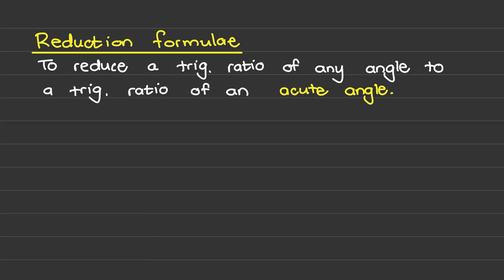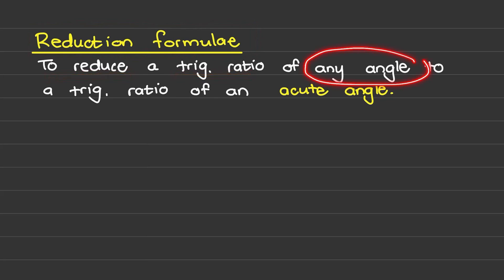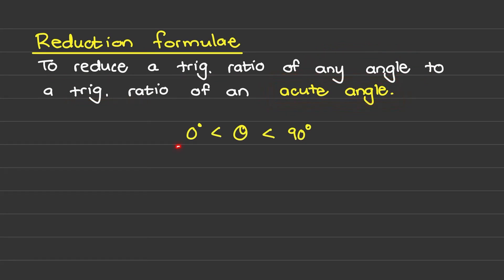In this video we'll discuss the reduction formula for trigonometry. A reduction formula is used to reduce a trig ratio of any angle to a trig ratio of an acute angle, and remember an acute angle is an angle between 0 and 90 degrees.